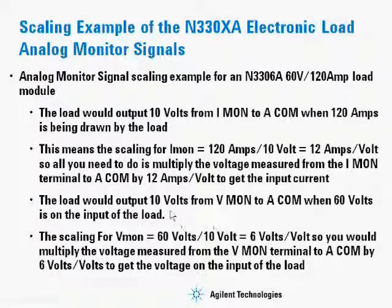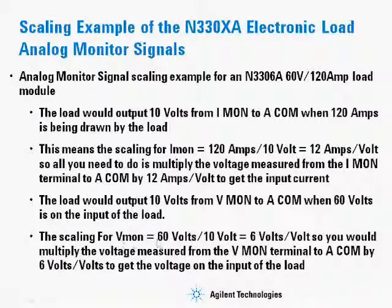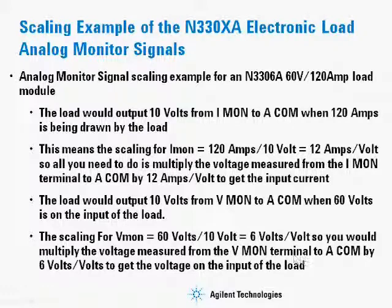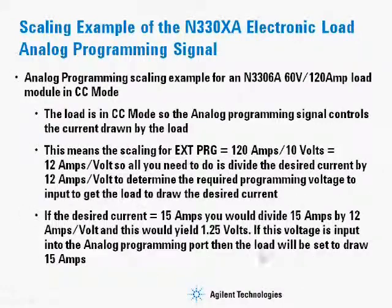For the Vmon terminals, the load would output 10 volts from Vmon to ACOM when 60 volts is on the input of the load. The scaling for Vmon equals 60 volts per 10 volts, which reduces to 6 volts per volt. Multiply the voltage measured from the Vmon terminal to ACOM by 6 volts per volt to get the voltage on the input of the load.